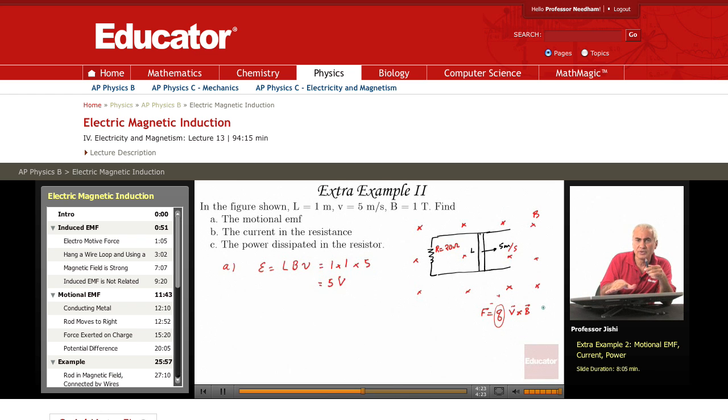The right hand rule. You put your fingers, four fingers, along V. So you put your four fingers to the right and you rotate them toward B, and the thumb points up.